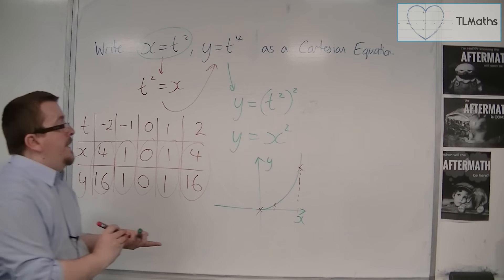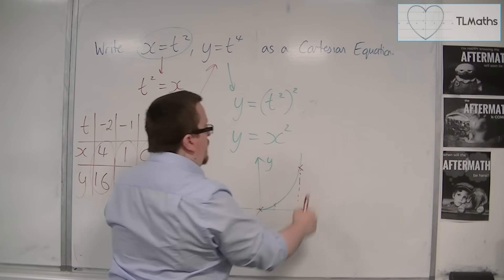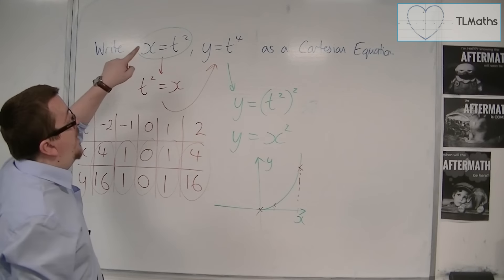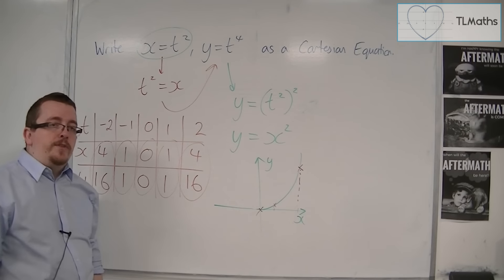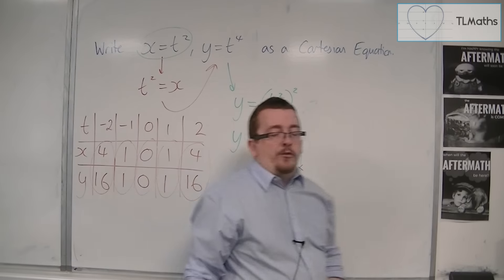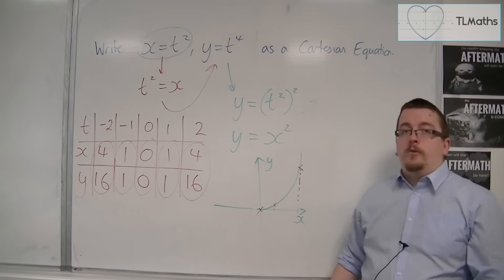And this is the shape of the curve given by that pair of parametric equations. It's likewise equal to x squared, but actually, it's only half of it.